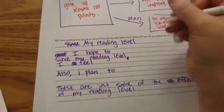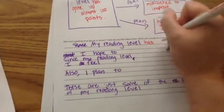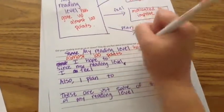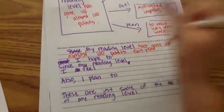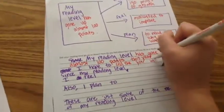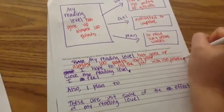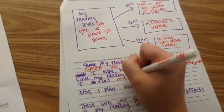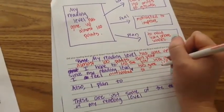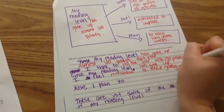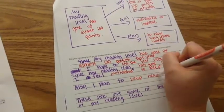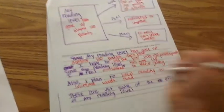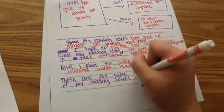And now I'm ready to complete my paragraph. So I'm going to begin again by my reading level has gone up almost 100 points this year. And then what are my hopes? I hope to end the year with 150 points of growth. Since my reading level has gone up, I feel motivated to keep going. Also, I plan to keep reading to increase my words read. And then I'll conclude. These are just some of the effects of my reading level improving.